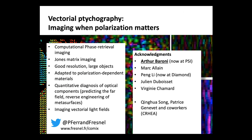To summarize: this is a computational phase retrieval imaging technique. What is important is that you image Jones matrices. It offers a very reasonable resolution in terms of microscopy, is adapted to very large objects, and is suitable for polarization-dependent materials. It has the advantage of providing quantitative diagnosis for optical components, especially when they involve phase and polarization together. It could be a nice approach for reverse engineering of metasurfaces, and I have also shown how to image vectorial light fields.